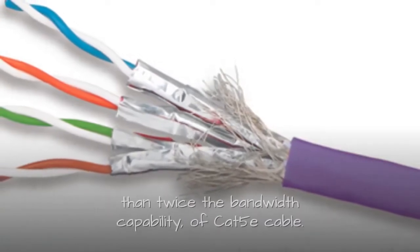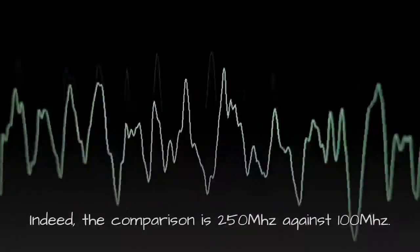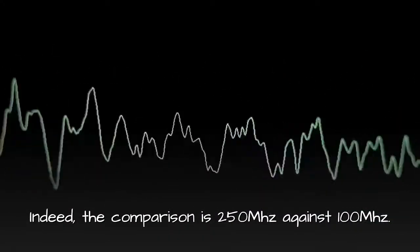In short, CAT6 cable has more than twice the bandwidth capability of CAT5e cable. Indeed, the comparison is 250 MHz against 100 MHz.